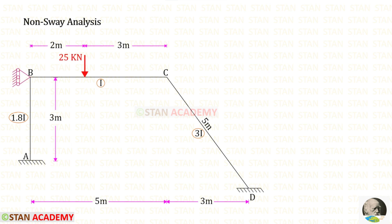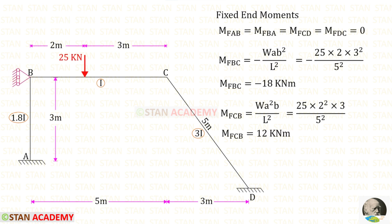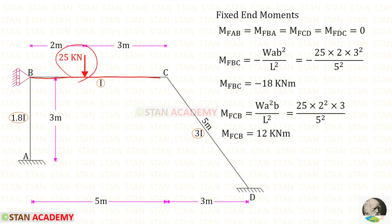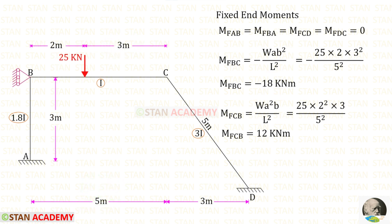In the non-sway analysis, we assume that at joint B there is a roller support which prevents the sway. Now let us find the fixed-end moments. In members AB and CD there is no load, so all fixed-end moments are zero. In member BC, we have an eccentric point load of 25 kN. Using the formulas minus WAB² / L² and positive WA²B / L², with A = 2, B = 3, and L = 5, we get M_BC = -18 and M_CB = +12.